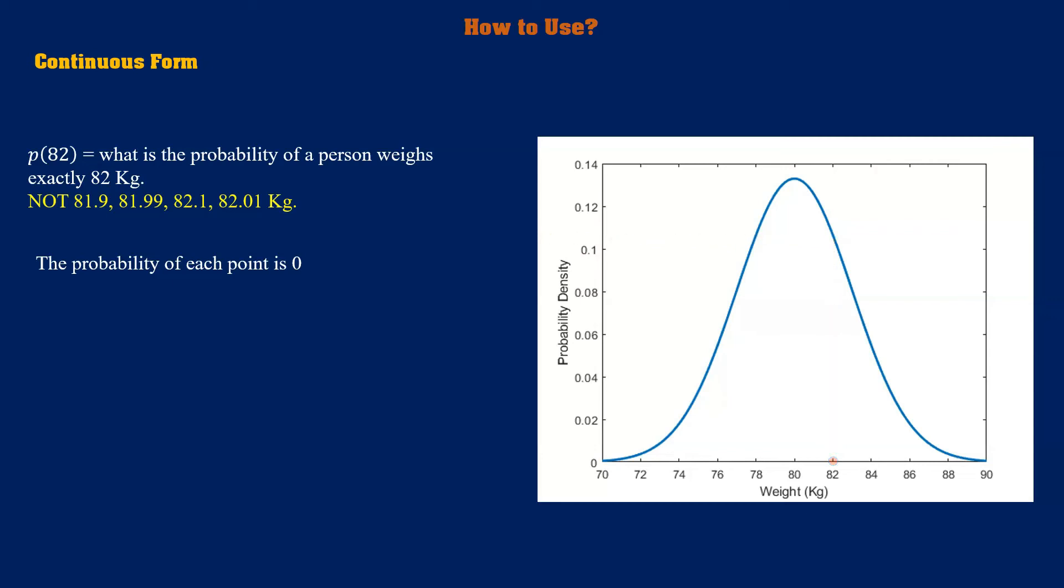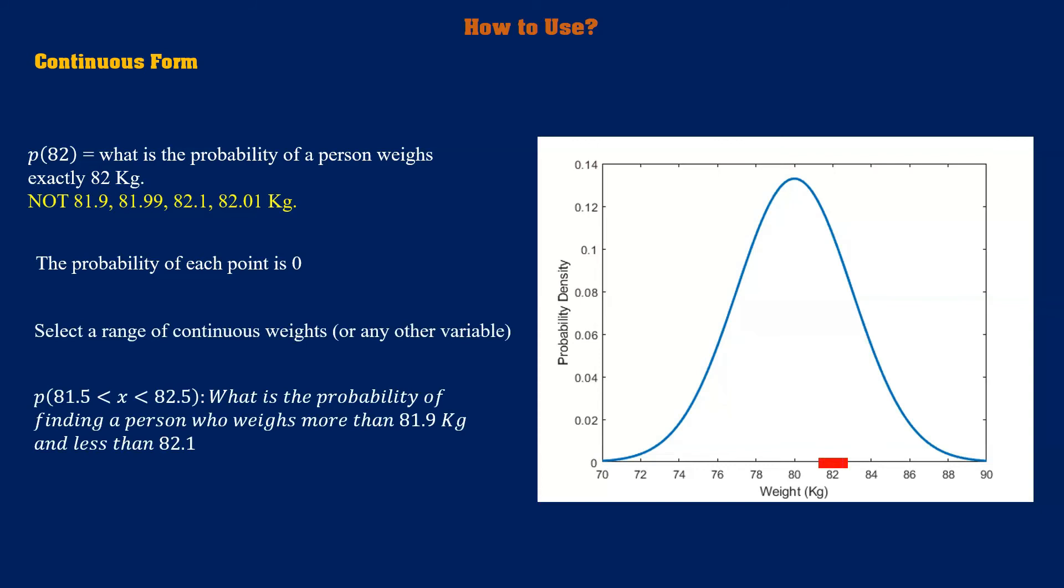Instead, you have to specify a range of weights which is around 82. For instance, you might say the probability of seeing a person who is heavier than 81.5 kilogram and lighter than 82.5 kilogram. This is the true method to measure the probability of continuous weights and to do this, you should calculate the area between those two points.